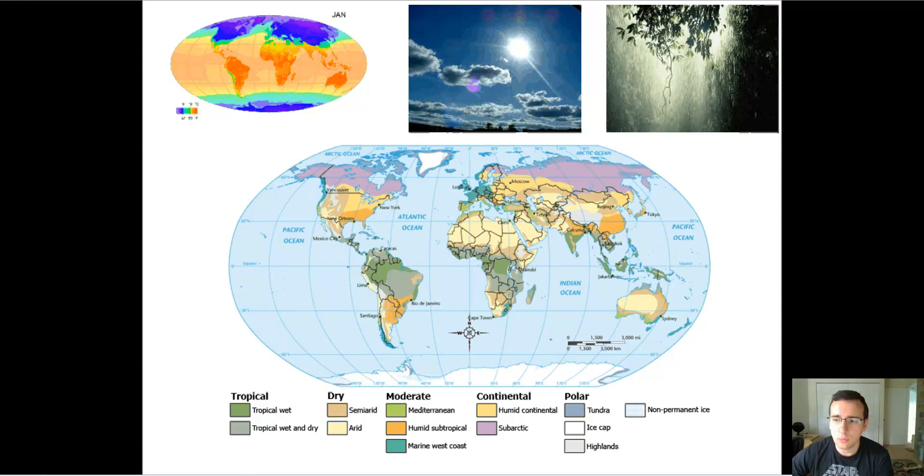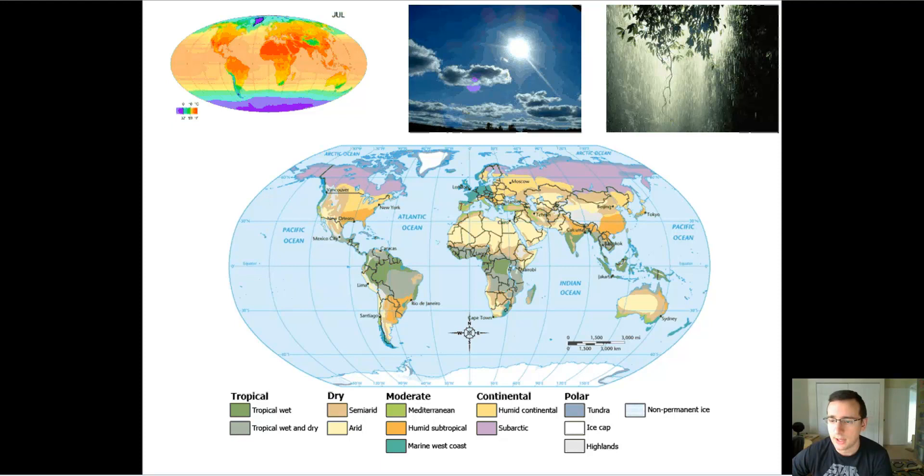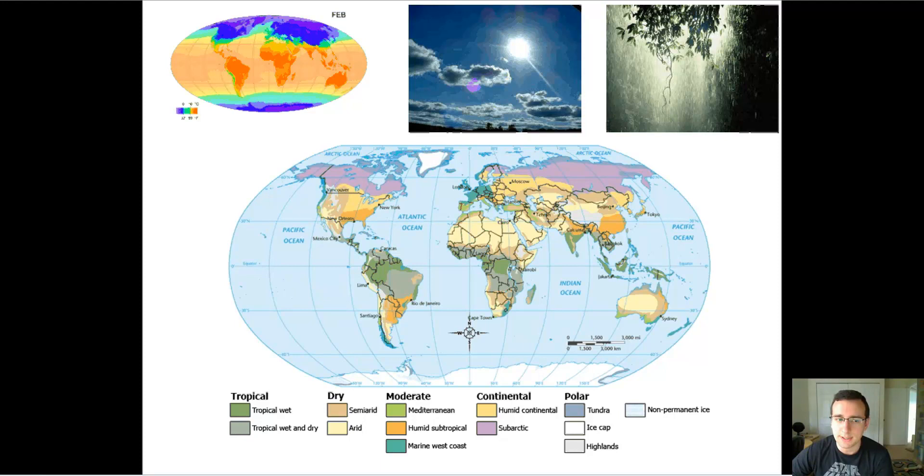When you talk about biomes, you ultimately have to talk about the factors that help determine why one place is different from the other. The two main factors are temperature and precipitation. Temperature has to do with the amount of sunlight that an area receives, and precipitation has to do with the amount of water that's available in that area.